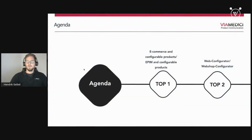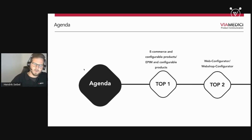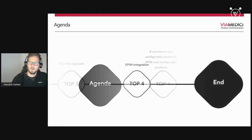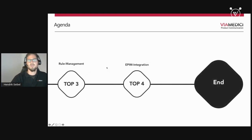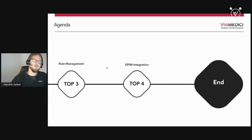A short overview of my agenda: e-commerce and configurable products, PIM and configurable products, then a short example of a web sales configurator and configuration integrated in a shop. Topic three is about rule management and rule sets, and topic four is the integration of the configurator in the PIM system.